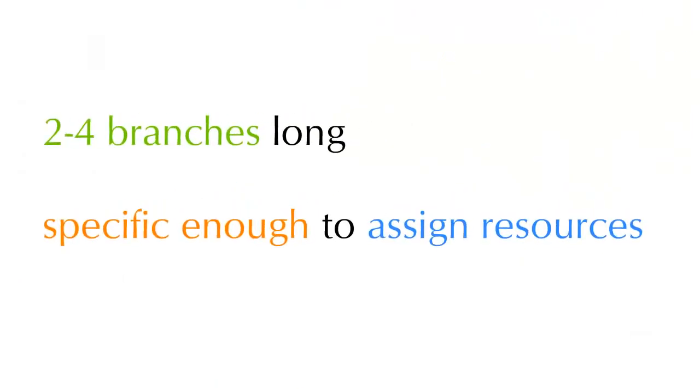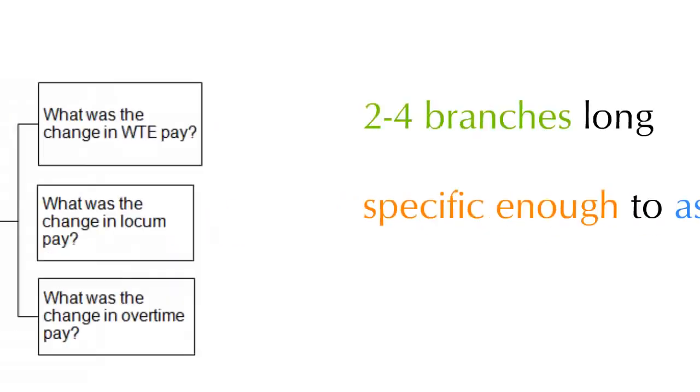Now you might be asking, how long should an Issue Tree be? This could conceivably go on and on. We would suggest an Issue Tree be two to four branches long, which tends to be long enough to help you unlock the general questions that will lead to hypotheses. Once the tree is specific enough to assign resources to, that's a reasonable place to be.